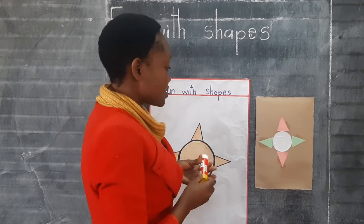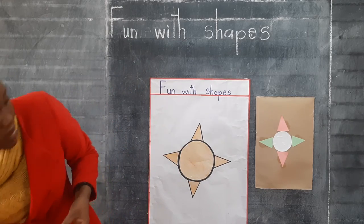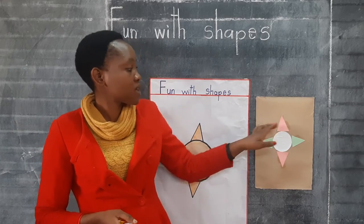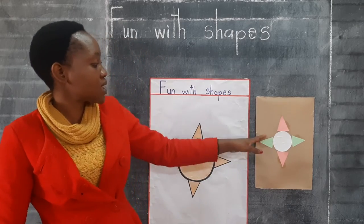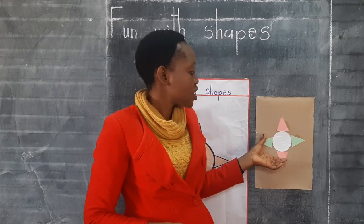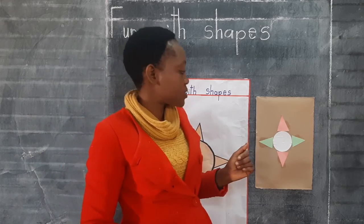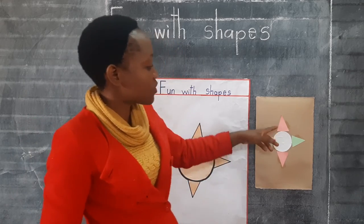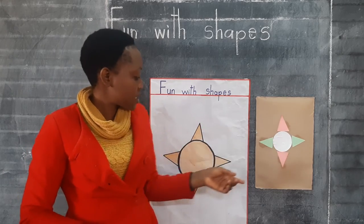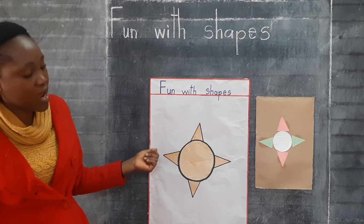Using this glue, the paper, and the scissors, we've managed to make our sun and it is looking nice. This is fun with shapes — you can make different things using only shapes. To make the sun, we used the triangles and the circle, just like we did here.